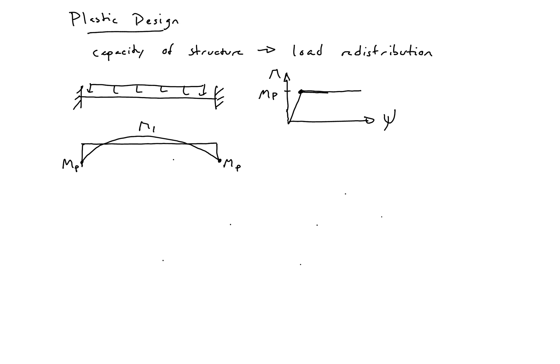But it is allowed to continue to deflect. So what will happen is we can represent that point with a hinge. A hinge cannot take any additional moment, but it can take additional curvature. So this gives us our new structure.